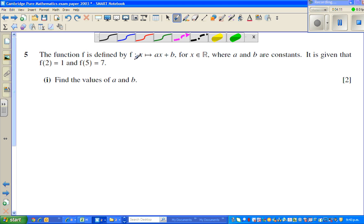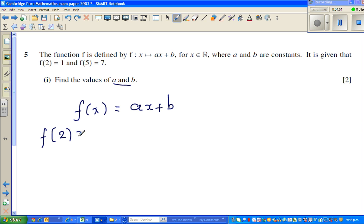The function f is defined by f such that x runs from, this is function ax plus b, for x belongs to real numbers, where a and b are constants. It is given by f of 2 is 1 and f of 5 is 7. You want to find the constants a and b. It's a very easy question. So what is given? We know f of x function is ax plus b. This is what is given. Real numbers, x belongs to real numbers. And the next information that we have is f of 2 is 1.